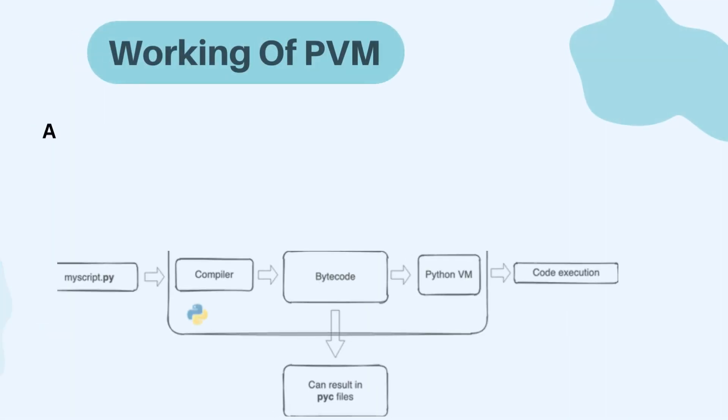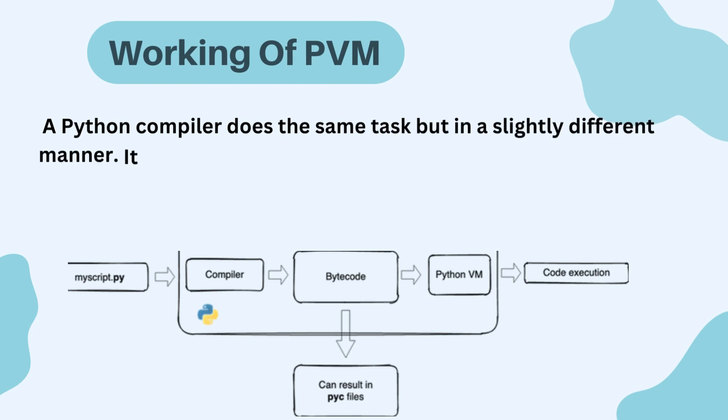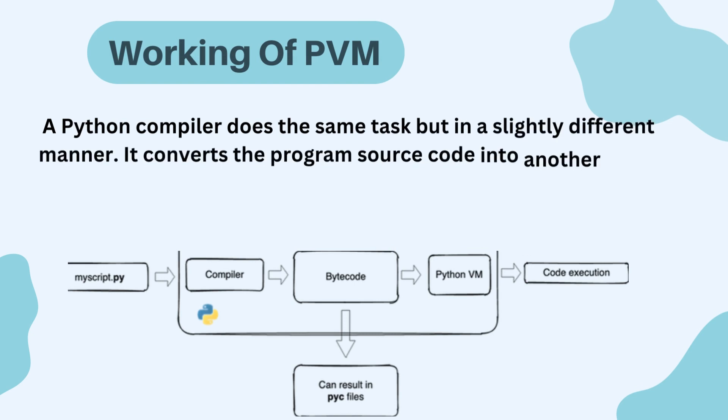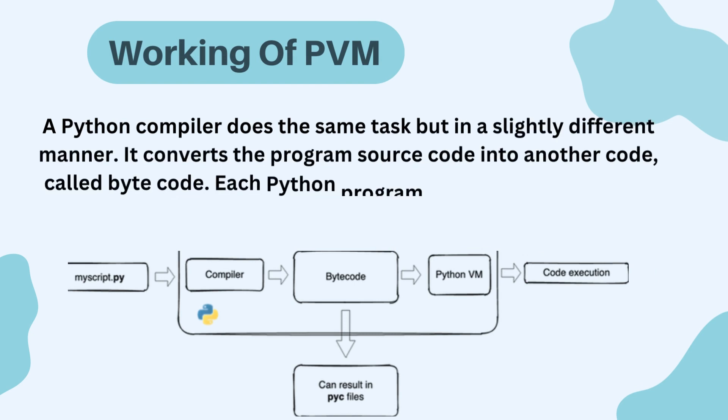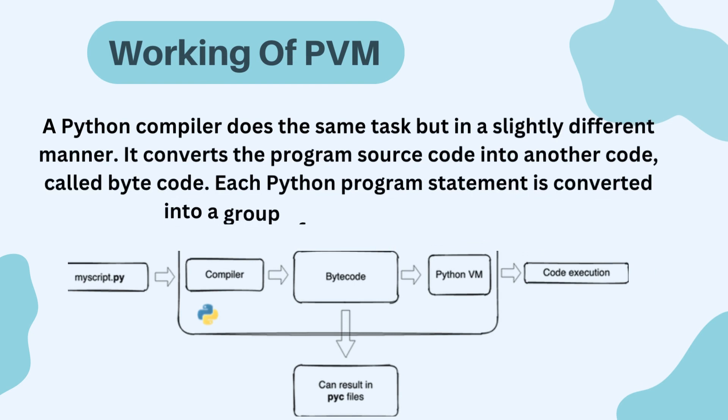Working of PVM. A Python compiler does the same task but in a slightly different manner. It converts the program source code into another code called bytecode. Each Python program statement is converted into a group of bytecode instructions.